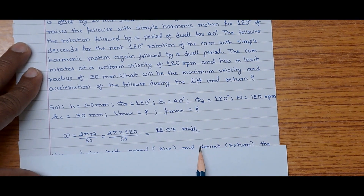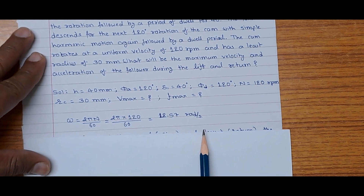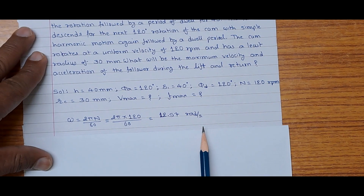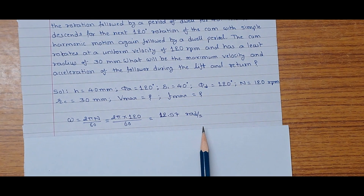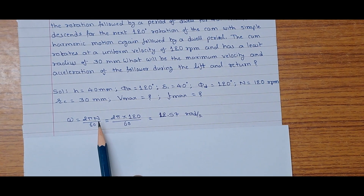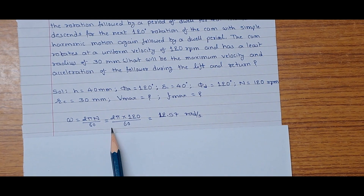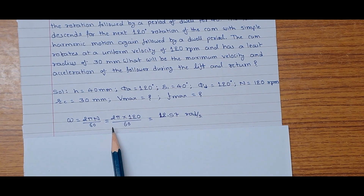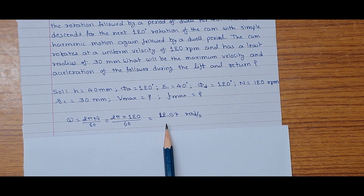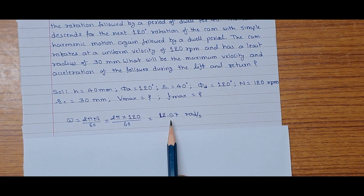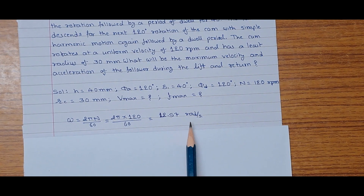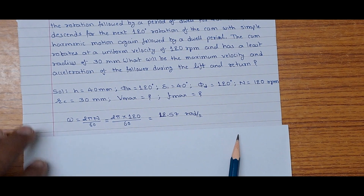Now let us calculate omega, the angular speed of the cam. It is given by 2π N / 60. Substituting the values and calculating, we find omega = 12.57 radians per second.